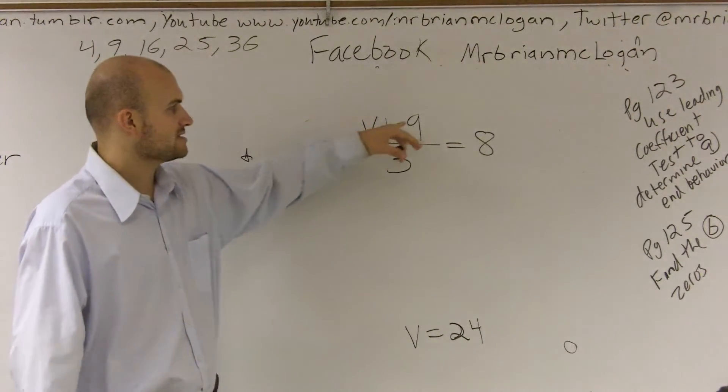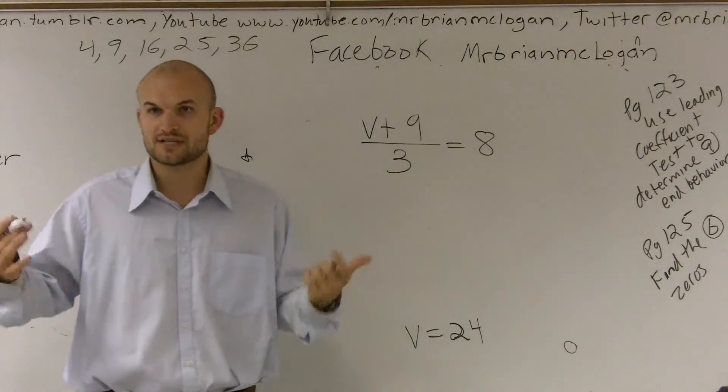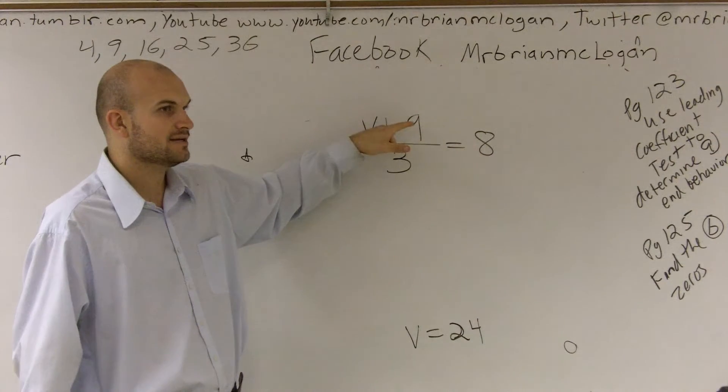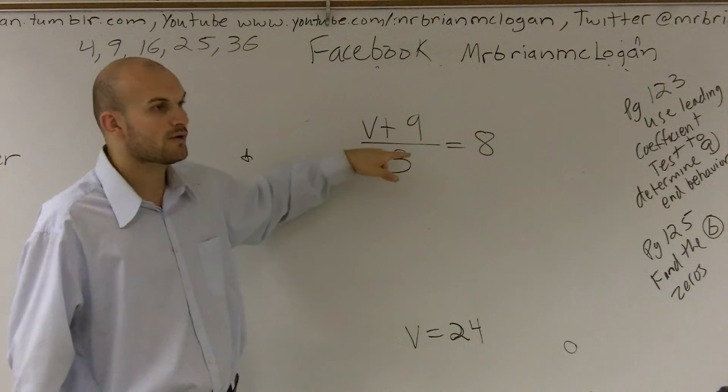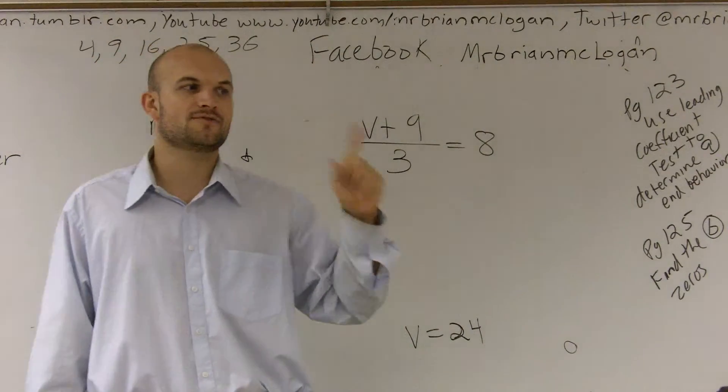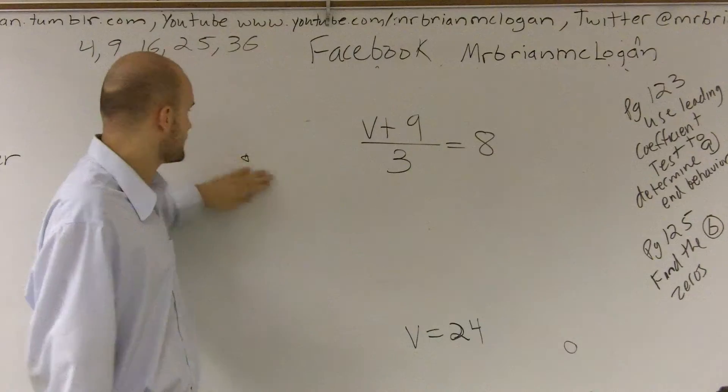So what this says is v plus 9 divided by 3. Now usually I've told you to undo addition and subtraction first, right? Well, there's a problem. You cannot undo adding 9 because the 9 is already being divided by 3. So the first step we always want to look to is see if you can simplify your equation. And I can simplify this by getting rid of my fractions.